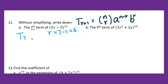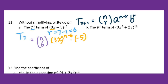So we write down n taken 6. For a, that's 3x, so we do n minus 6 power, then times negative 5, to the 6th power. From the given information, we know n equals 15.